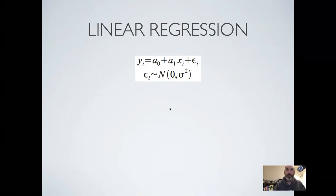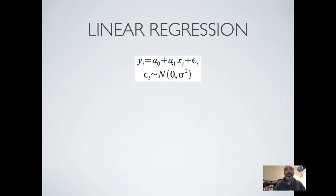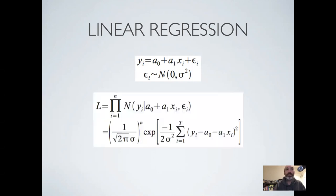To start with, consider this way of writing our basic linear regression model: y_i, some individual y data point, is related to some individual x based on an intercept a0, slope a1, plus some error, where that error is distributed normally with mean zero and variance sigma squared.